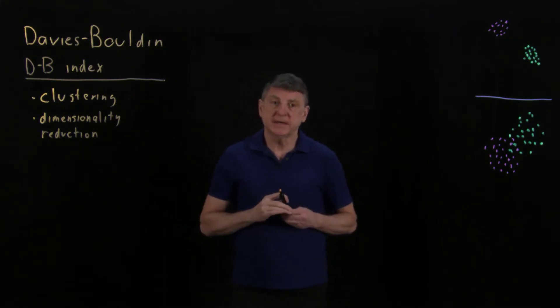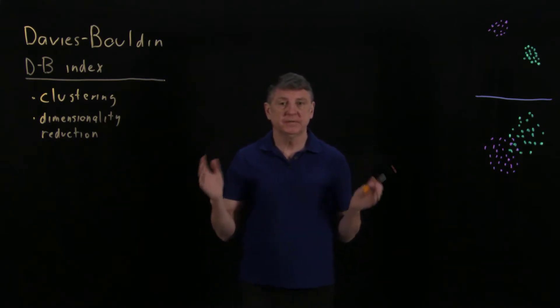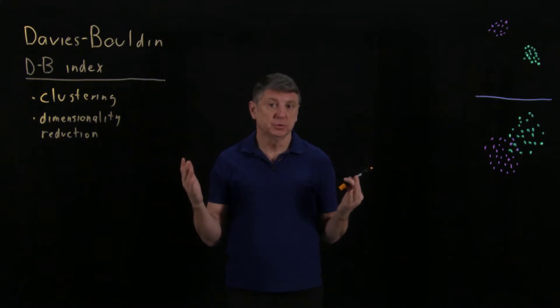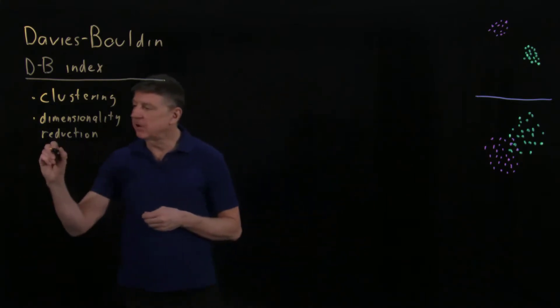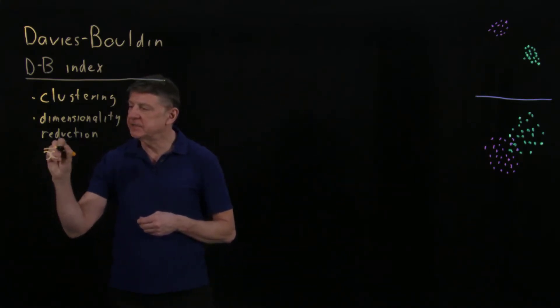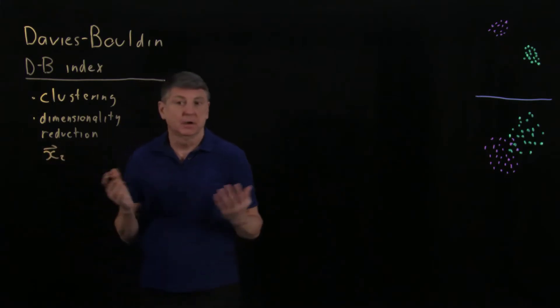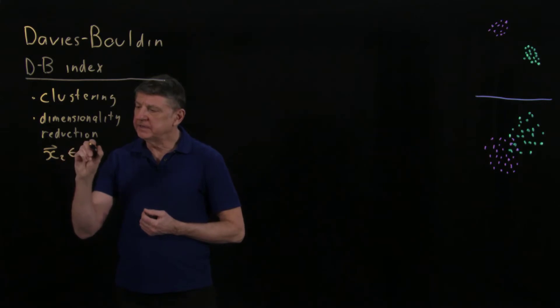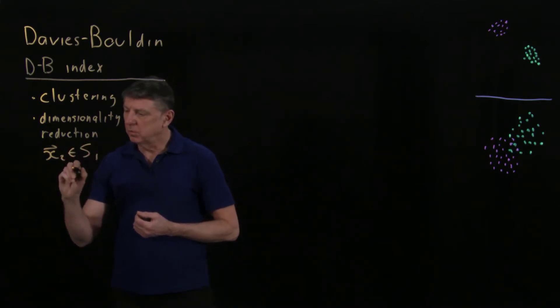So here's the basic idea. Suppose that we are given some data in two groups. What we have are data vectors and these are either in set one or in set two.